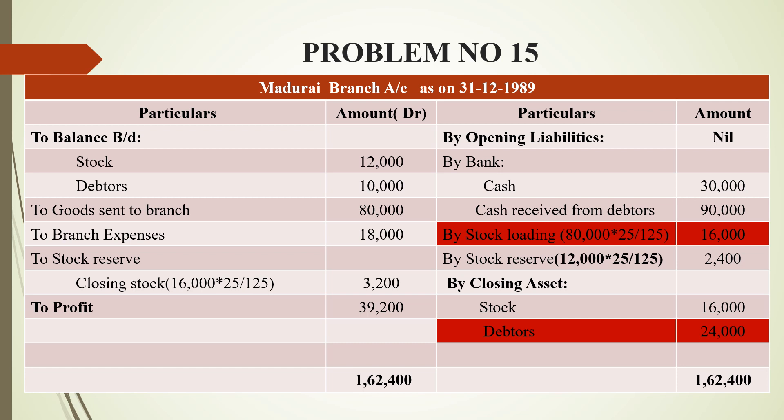On the credit side, closing stock is 16,000. That is 16,000 multiplied by 25 divided by 125, which equals 3,200 as stock reserve. We will also have opening liabilities. By bank: cash sales is 30,000 and cash received from debtors is 90,000. We need to mention the stock items to determine the exact value.